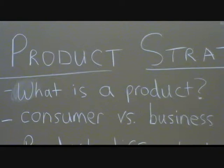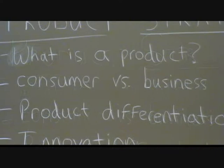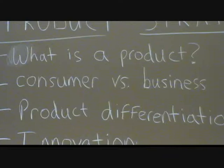You also need to know the difference between the two types of products: consumer products and business products. Consumer products are purchased for personal use or consumption. Business products are purchased to use either directly or indirectly in the production of other products.